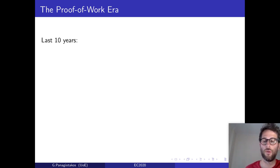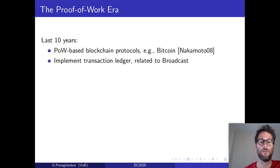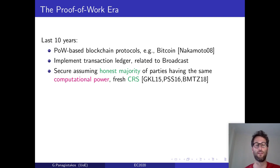Now, in the last 10 years, we saw the development of proof-of-work-based blockchain protocols, such as Bitcoin. These protocols typically implement a transaction ledger, which is a primitive related to broadcast, and have been shown to be secure, assuming that the majority of the parties is honest, as long as they have the same computational power, and as long as they have access to a fresh CRS setup, that is a CRS that becomes known to all parties, including the adversary, at about the same time.